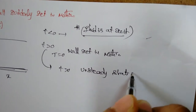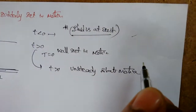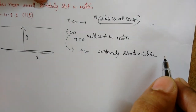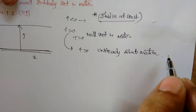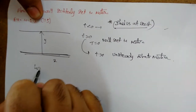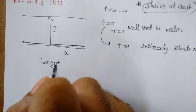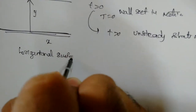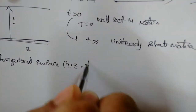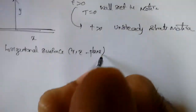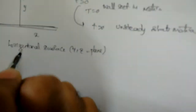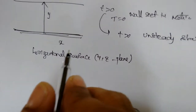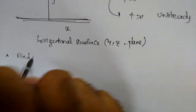These are the conditions given in the problem. The problem states a semi-infinite body of liquid with constant ρ and μ on a horizontal surface in the x-z plane. For t less than zero, fluid is at rest; at t equal to zero, wall moves in the x-direction; for t greater than zero, unsteady state motion. Find velocity vx as a function of y and t.